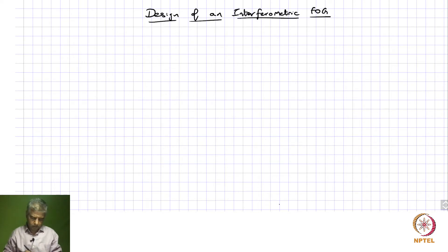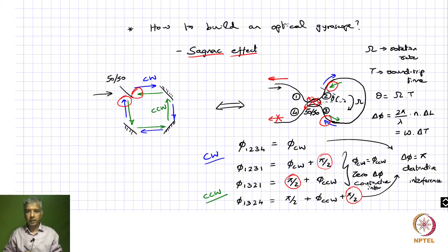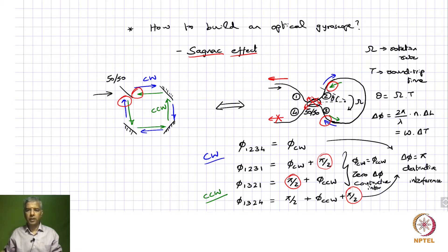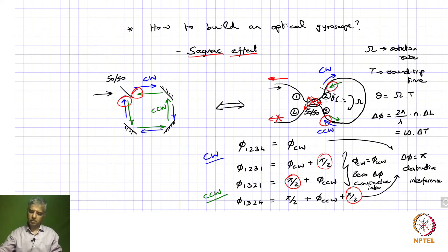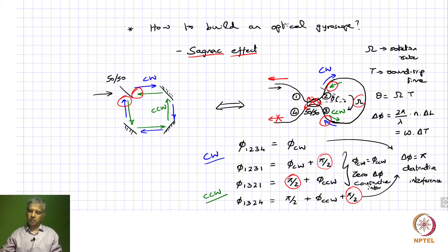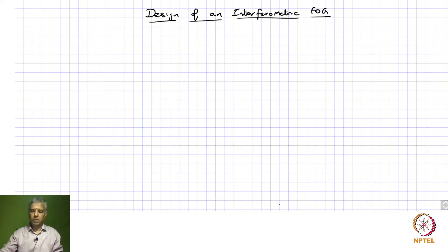During our last lecture we were talking about fiber optic gyroscope and we were looking at the principle behind the fiber optic gyroscope, which is what we identified as a Sagnac effect. Essentially we are looking at phase changes between clockwise propagating waves and counterclockwise propagating waves, and there will be a phase difference whenever there is a rotation, which is what we are actually interested in measuring through this Sagnac interferometer.